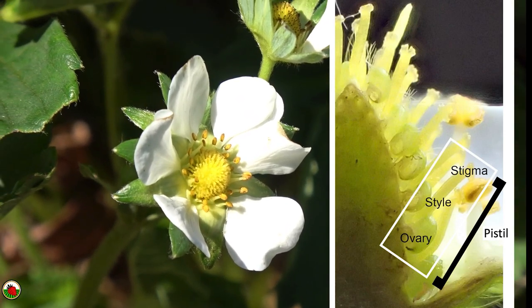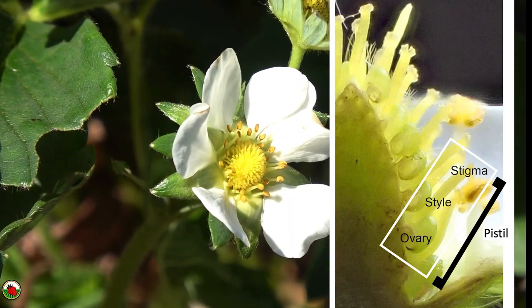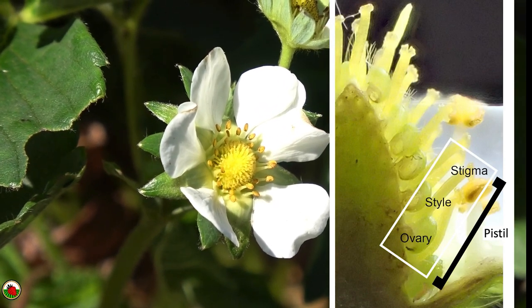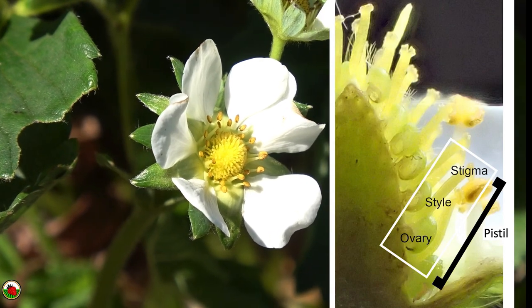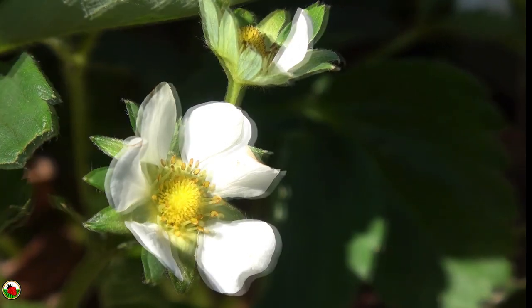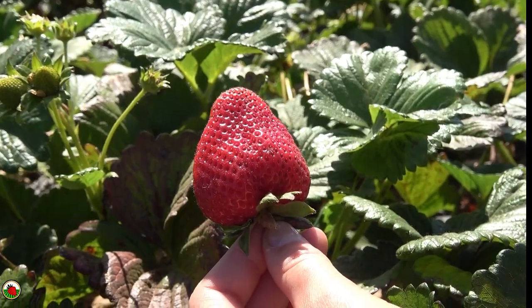The stigma is the tip of the pistil, and this is where the pollen from the anther needs to land. Once the pollen lands on the sticky surface of the stigma, it will germinate and a pollen tube will grow down the style and fertilize the ovary at the bottom of the pistil. That fertilization leads to development into the seed, which are found on the surface of the strawberry fruit. There are around 200 seeds on every strawberry. The correct term for this type of seed is an achene — a seed with a hard outer shell.